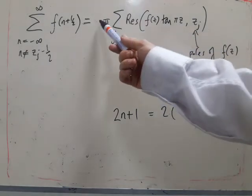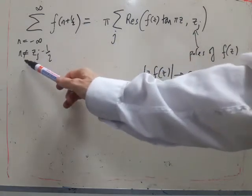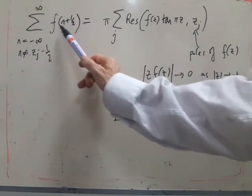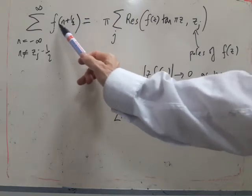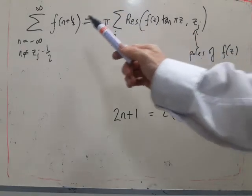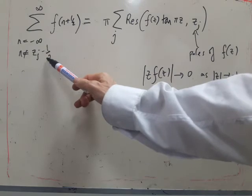So notice there's a plus sign here. Here we've got tan, and of course we can't have any singularities in this expression. So if f has any poles, then to ensure that those poles don't appear in this formula, we have this condition here.